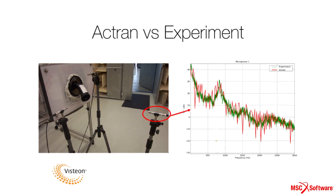This is the Vistion Lab test setup with the microphone circled in red. ACTRAN allows many virtual microphones to be used when needed.